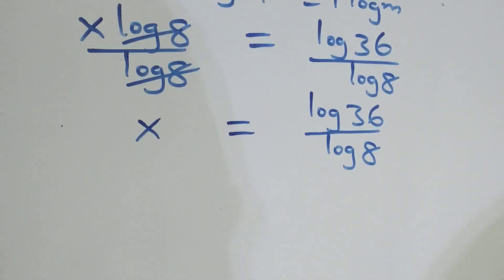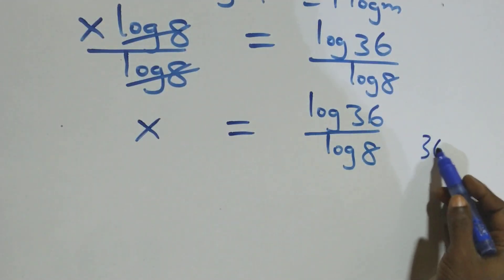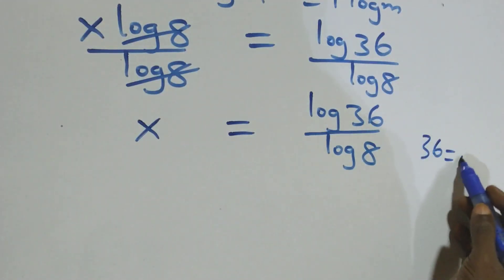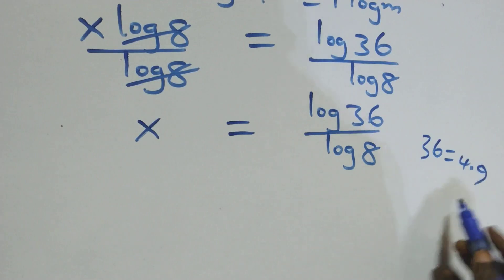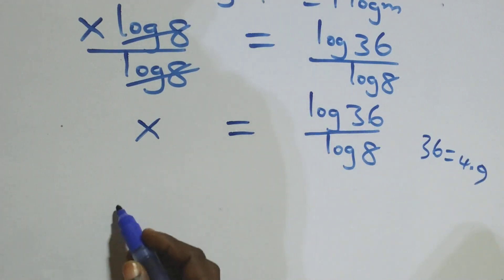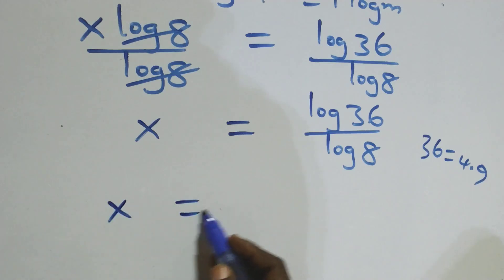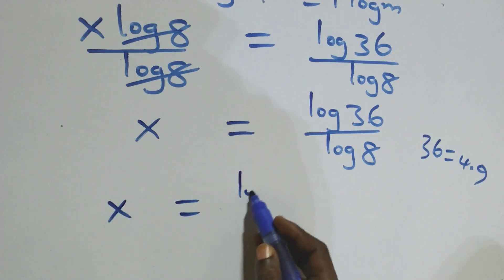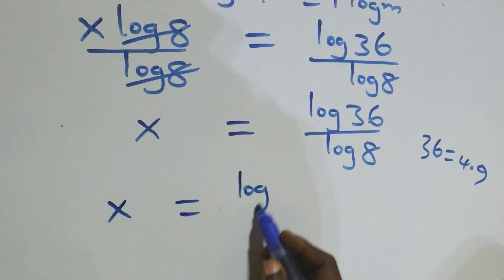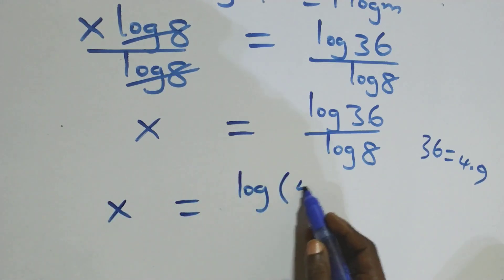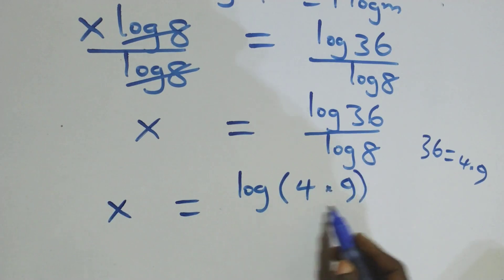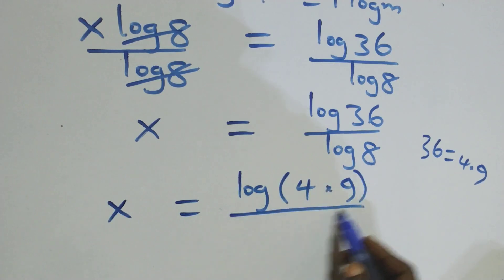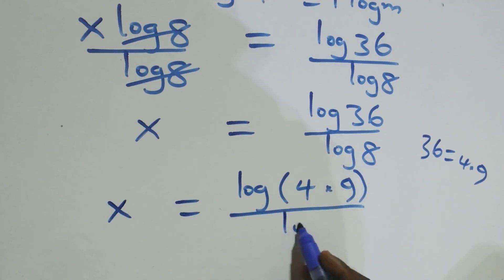Next step here, we can write 36 as 4 times 9, which implies what we have becomes x equals to log(4 times 9) over log 8.